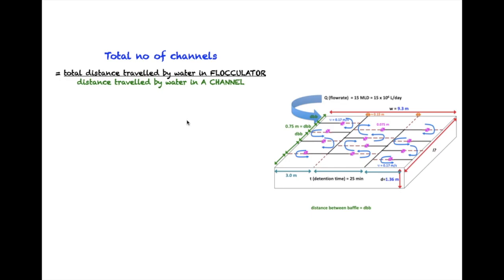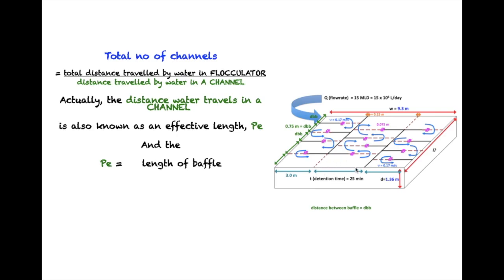Actually, the distance traveled by water in a channel is called the effective length, or PE. So what is the effective length? The effective length is the distance - is this distance - or in other words, is the length of the baffle, which is the width of the compartment minus the distance between end of baffle to the wall.